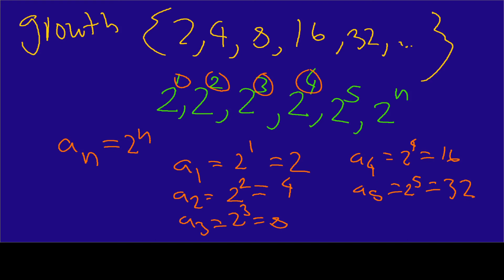Remember our original goal was to figure out what happens on the 14th day. So a sub 14 equals 2 to the 14th power, and 2 to the 14th power equals 16,384. That means on the 14th day we will have 16,384 cells.